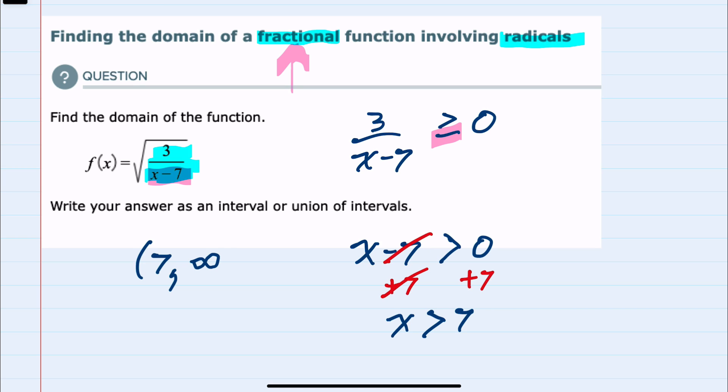And everything larger than 7, all the way up to infinity, and again we use the curve bracket because we never include infinity. So this would be the domain of our function f of x.